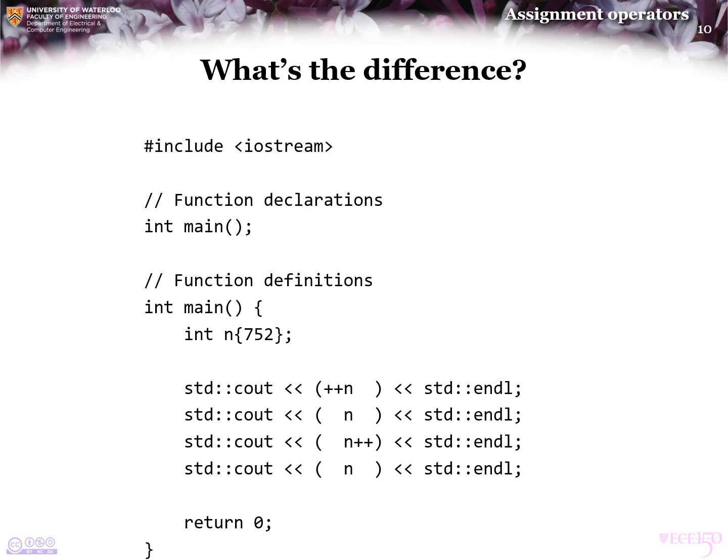For example, consider the following program. Here we have a local variable n that is initialized with value 752. I just made that number up. Now, in the first print statement, we print out the result of plus plus n. Then we print the value of n, then we print the value of n plus plus, and then we print again the value of n.